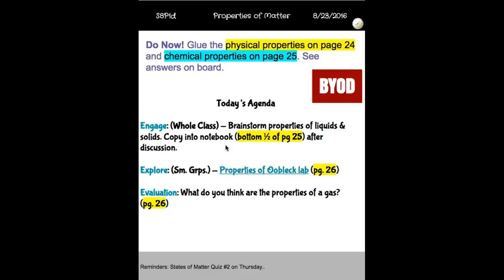Once we have the discussion, we're going to start our properties of oobleck lab. You need to make sure that you get all the materials for this lab and you follow the directions in order to see the lab work. You will need a ruler to make your data table.